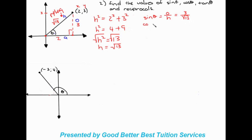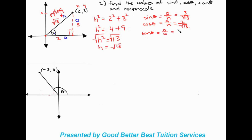We'll do cos theta next — that's adjacent over hypotenuse. The adjacent side is two over the hypotenuse of square root of thirteen. Then we do tan theta, which is opposite over adjacent — opposite is three, adjacent is two. And that is your answer for sine, cos, and tan.